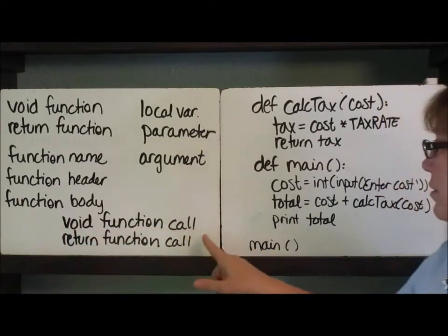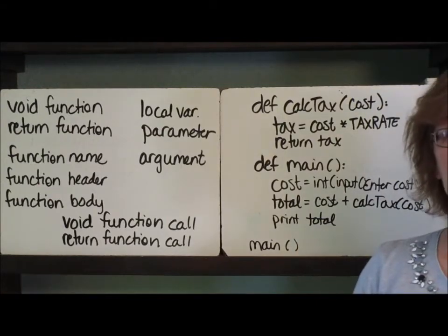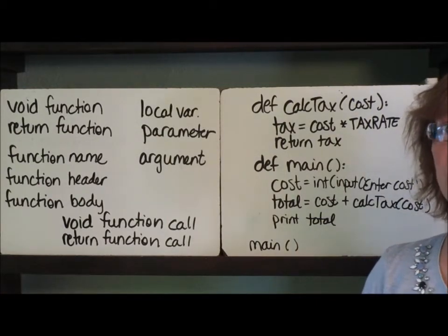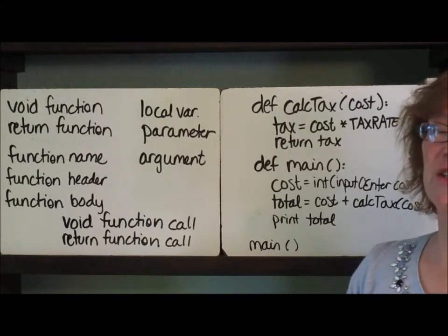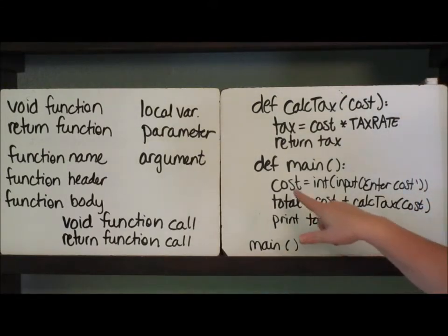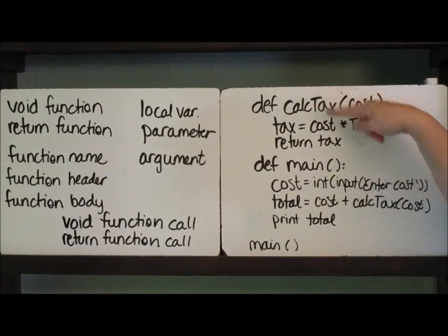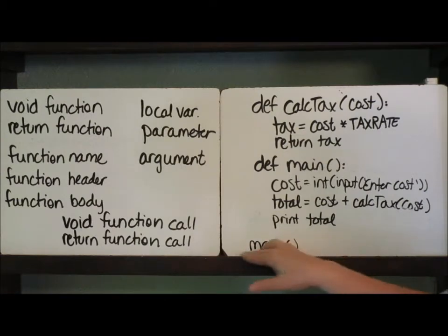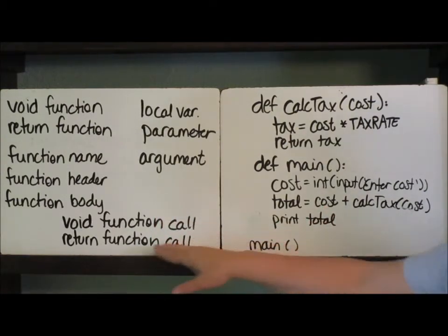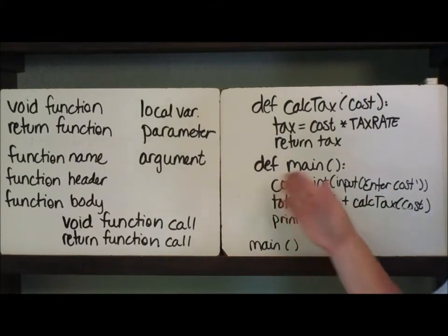Now let's talk about the calls. A void function call stands by itself — you see main right here, and those are the kinds of function calls we've mostly been doing because most of our functions have been void functions. But a particular thing you need to know about a return function call is that since it's returning a value, it has to be part of a statement. So here's an example: total equals cost plus cap_tax — cap_tax is my function, and this is how I call it. So a void function call stands alone, while a return function call has to be part of something, like a print statement or an assignment statement.